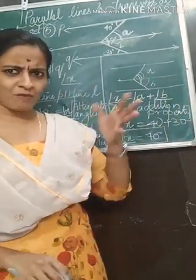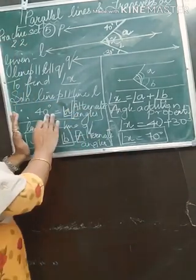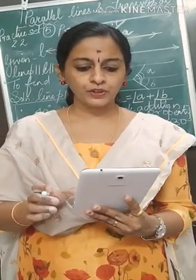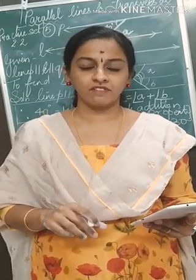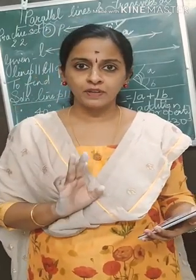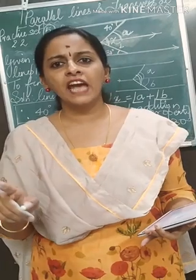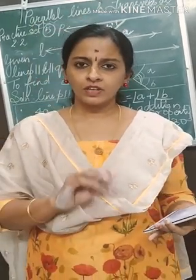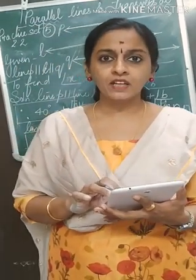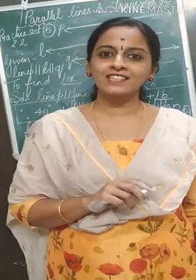So this way the sum was not at all tough. Alternate angles were clearly visible — you just need to know how to write the steps. Don't make it too lengthy; go point by point and write proper reasons. We have completed practice set 2.2. For the next class we will have a construction, so be ready with your geometry box: two set squares, protractor, scale, a nicely sharpened pencil, and compass. Practice well, wish you all the best. Stay safe and healthy. Bye students.